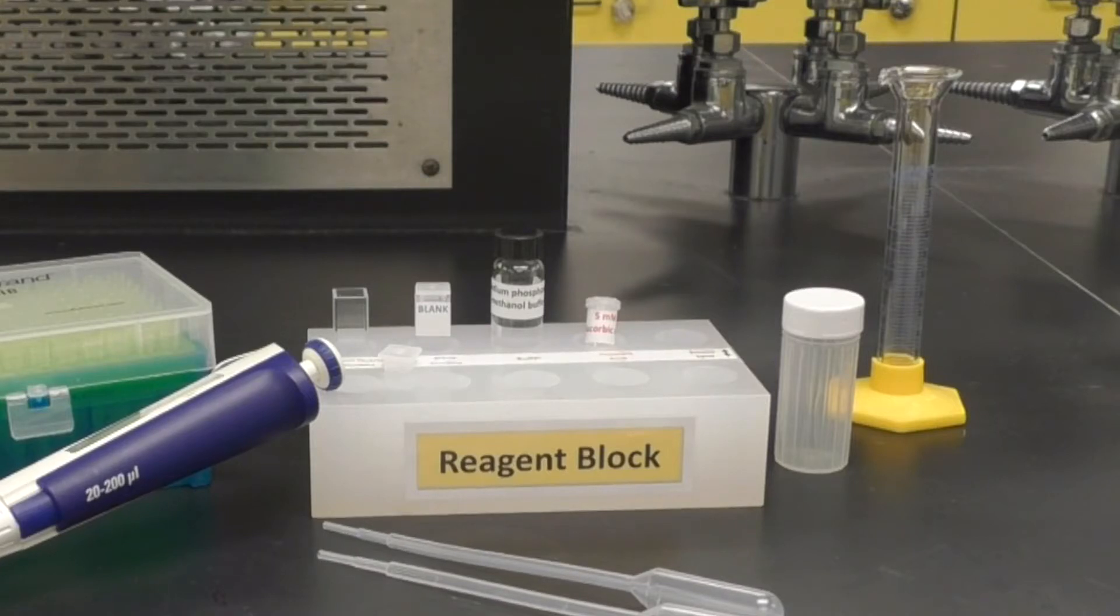The reagent block will contain an empty glass quartz cuvette, a prepared blank quartz cuvette, a vial of buffer, and a microfuge tube of ascorbic acid.